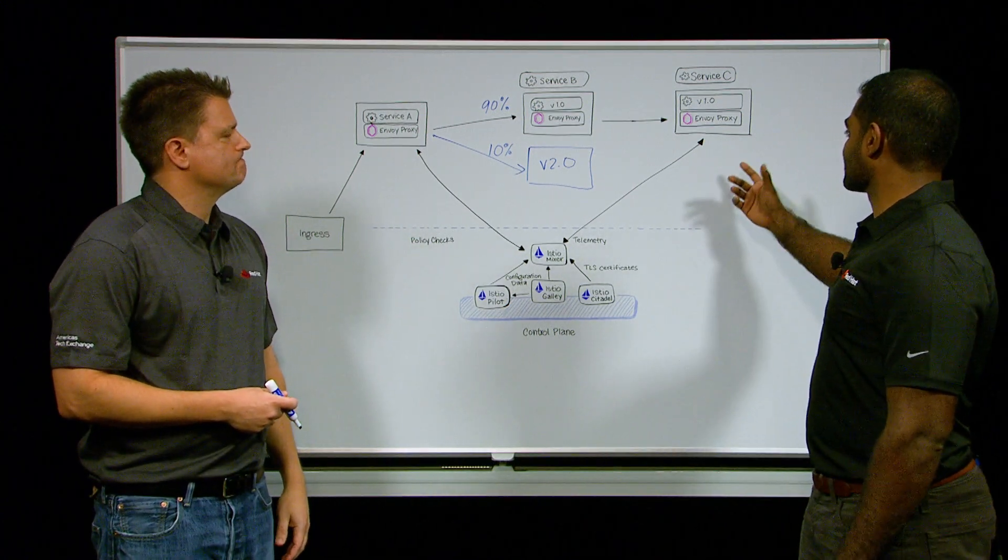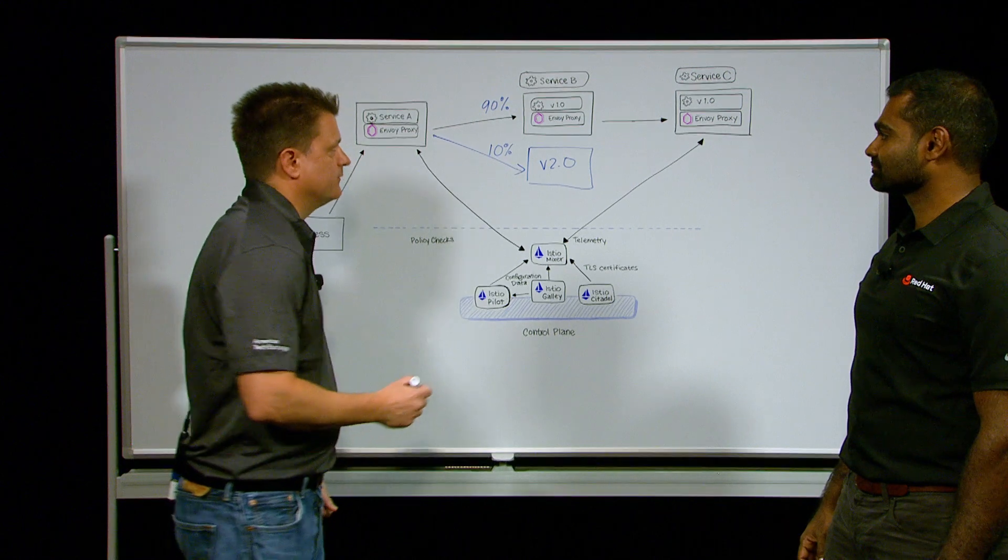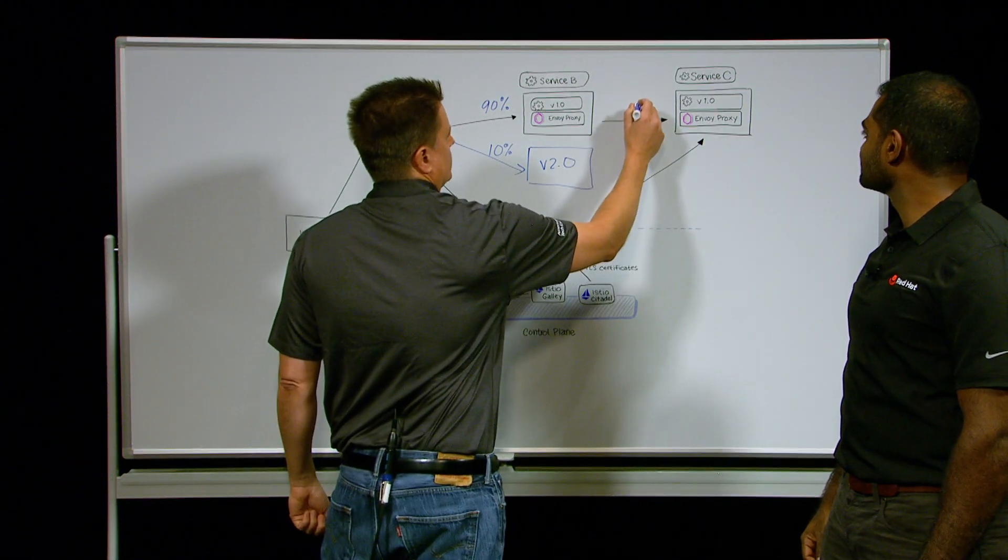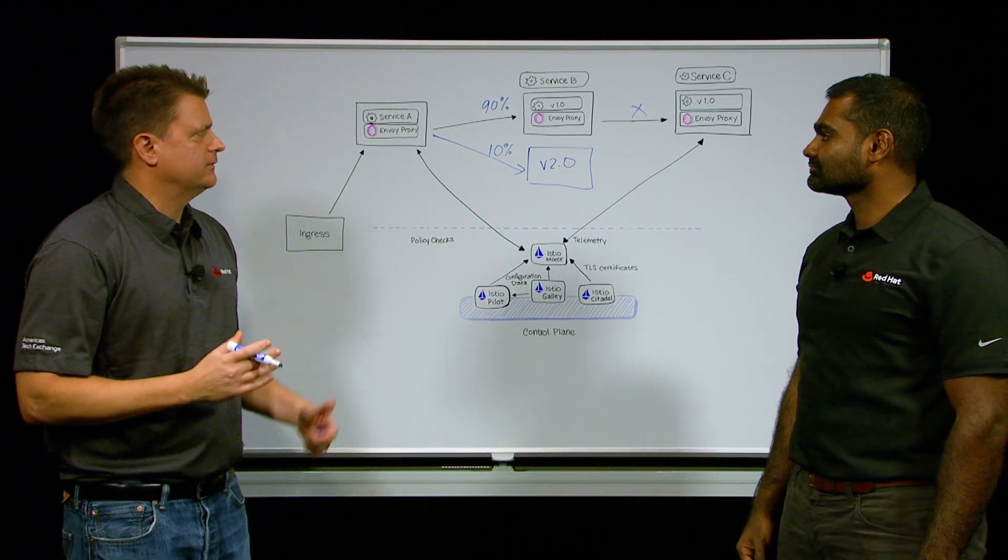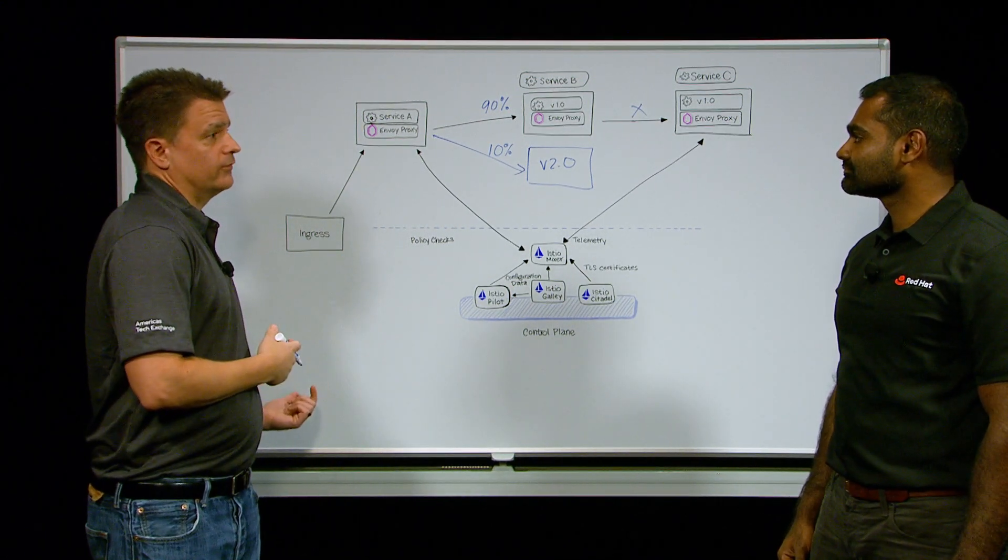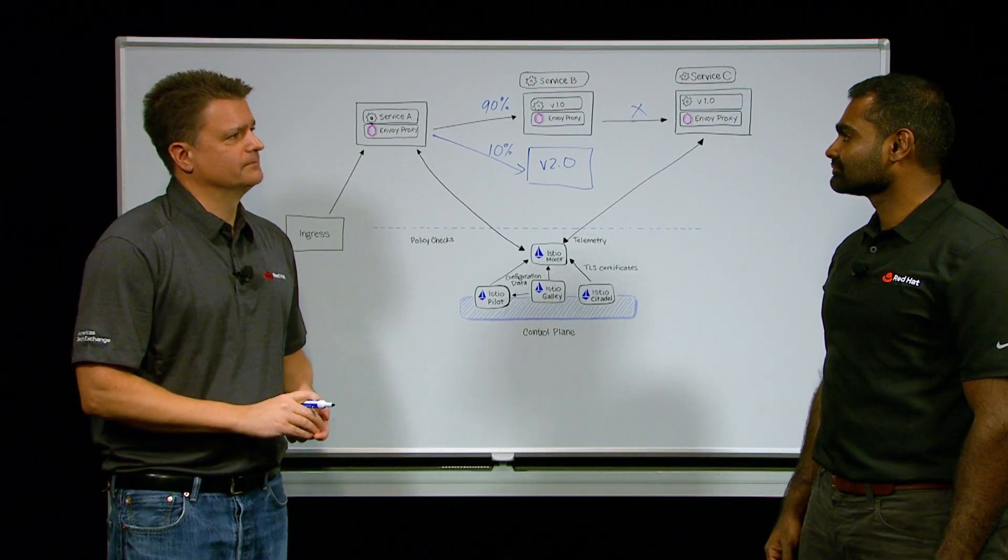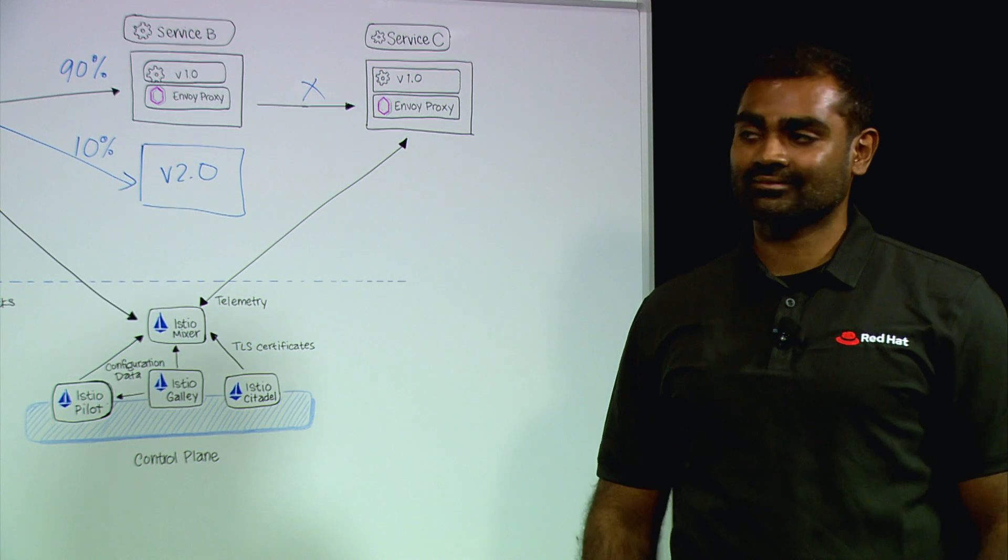What if one of your services was just completely down? Well in that case let's say Service C became unresponsive here. There's a feature called Circuit Braking which allows the mesh to short circuit that request so that your users aren't hopelessly waiting on an answer. And you're not wasting resources trying to ping a service that's completely down. That's right.